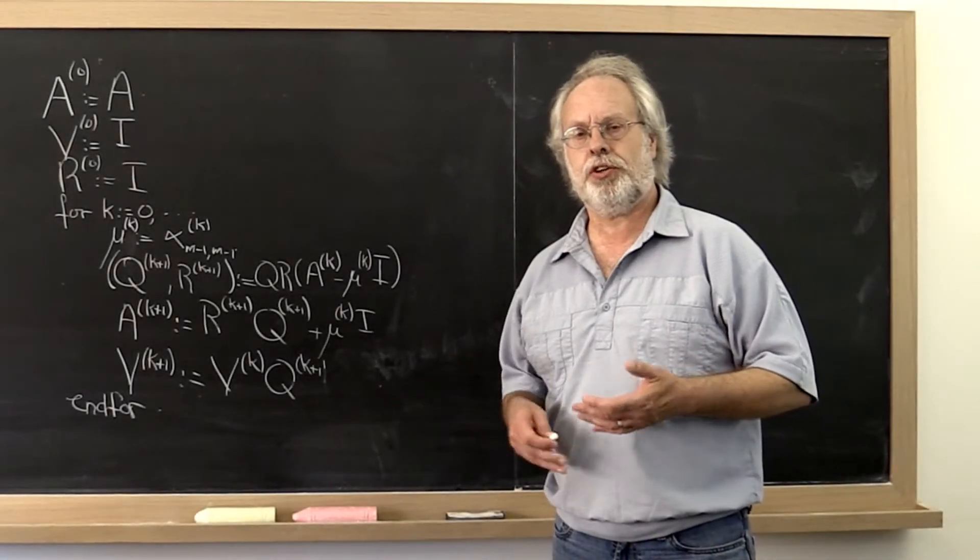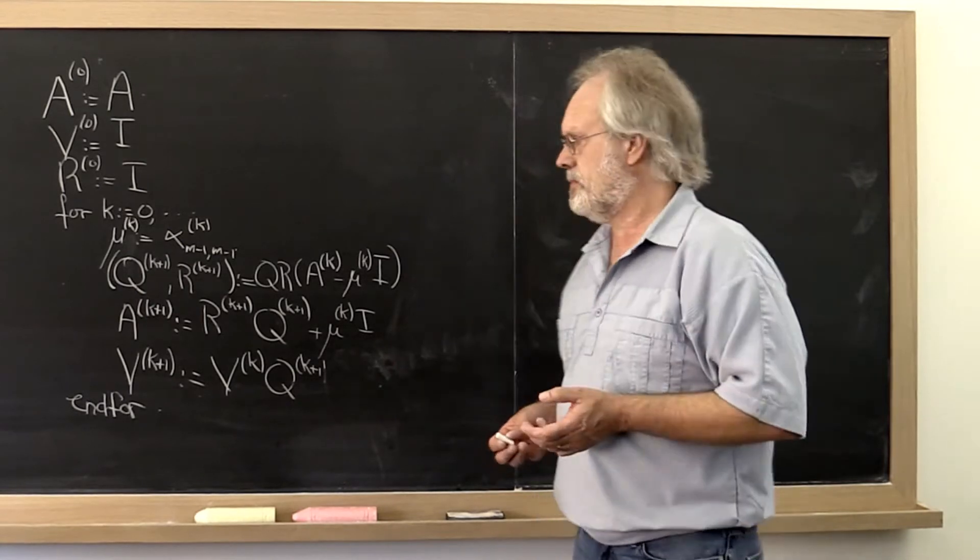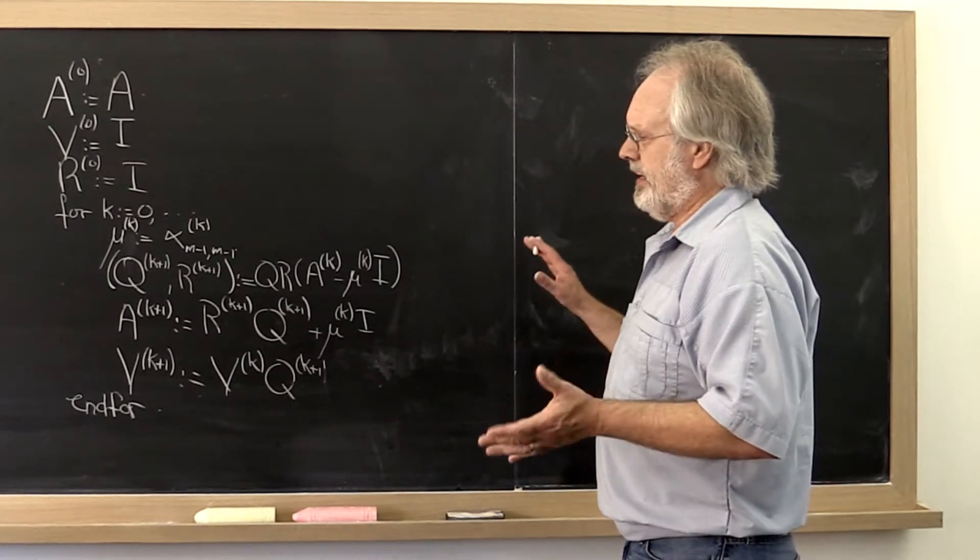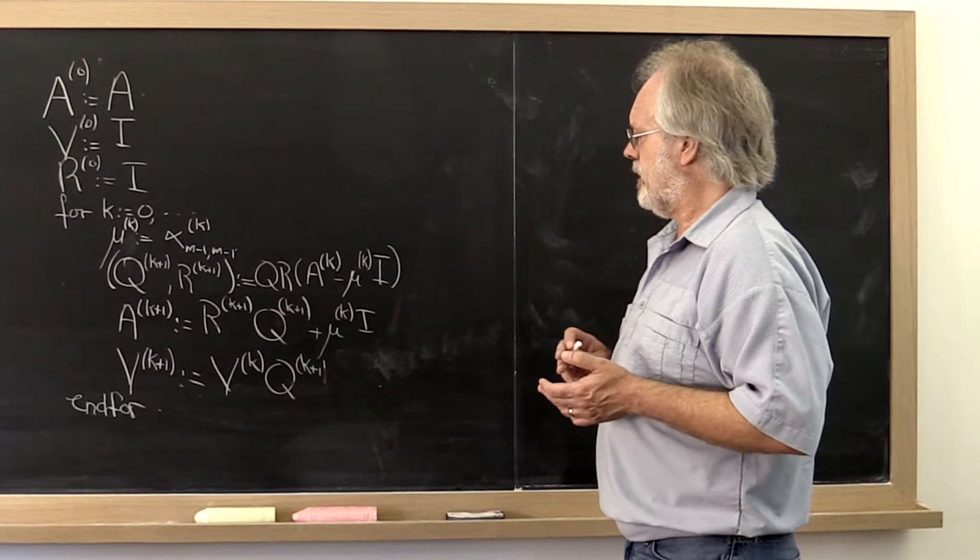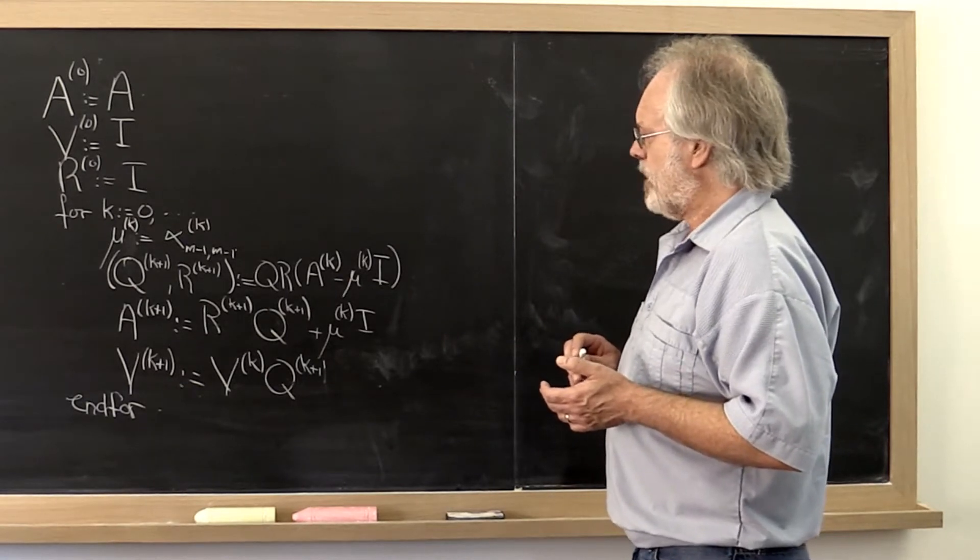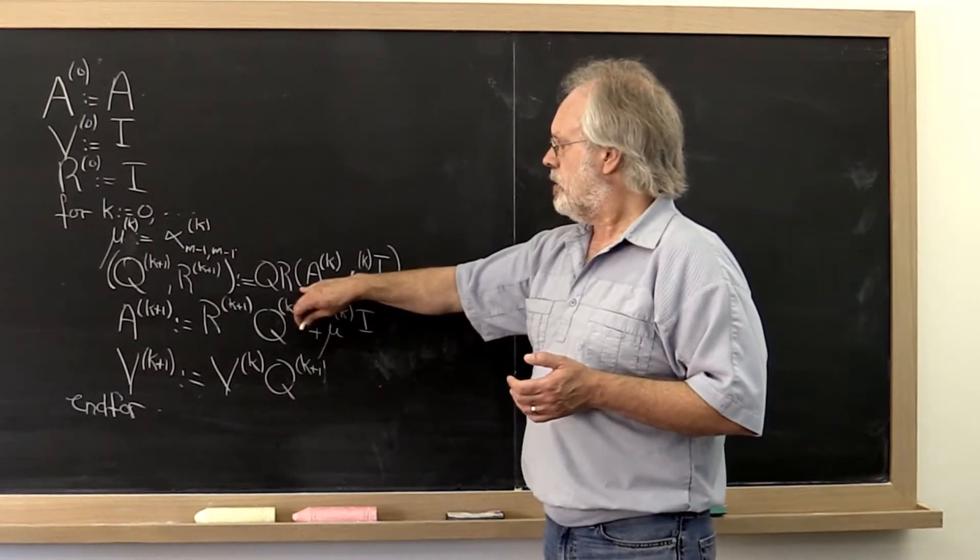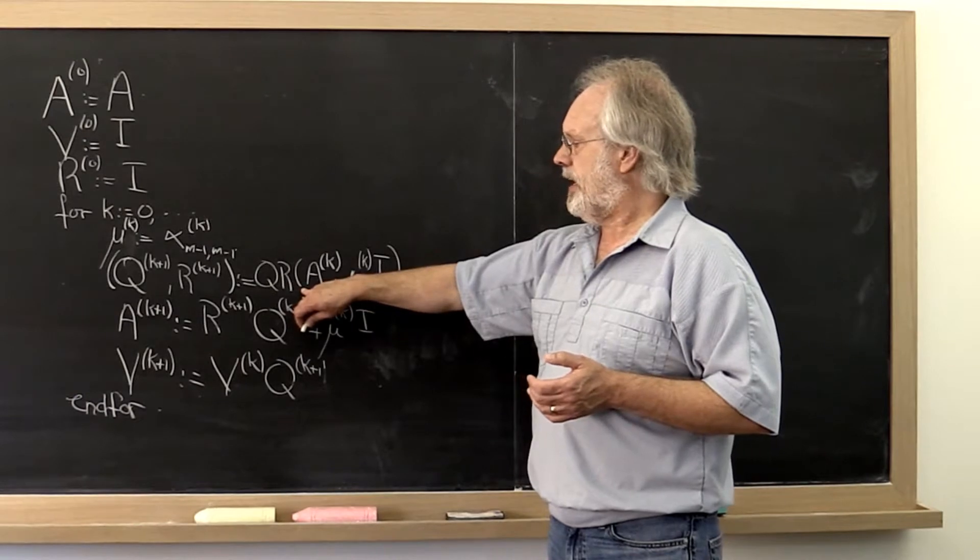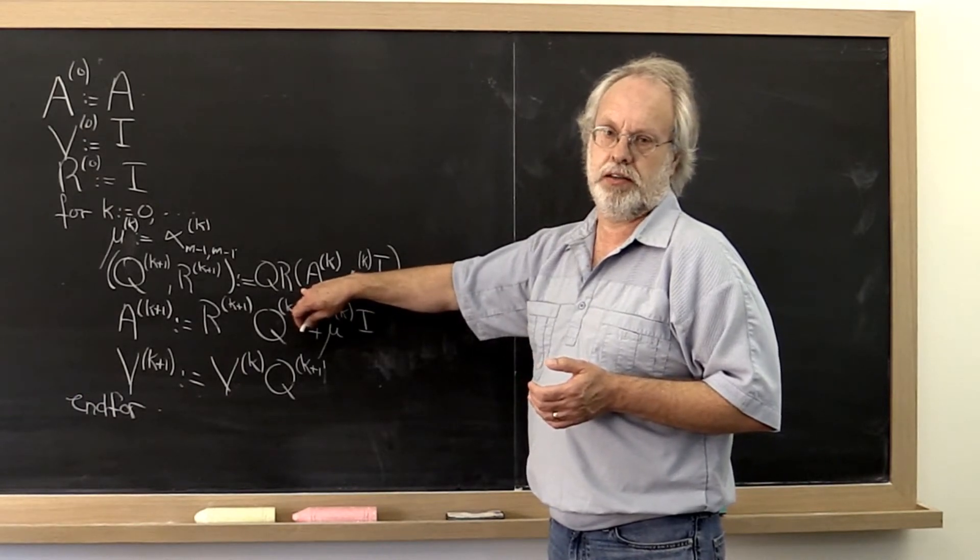Let's finish our discussion of simple QR algorithms by revisiting what the expense here actually is. We probably would want to use a Householder-based QR factorization right here.